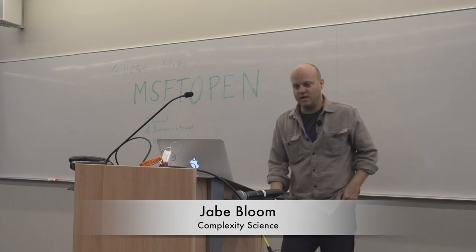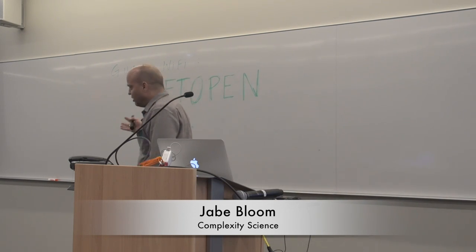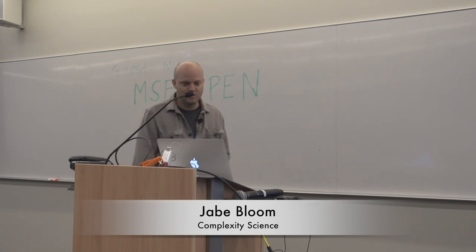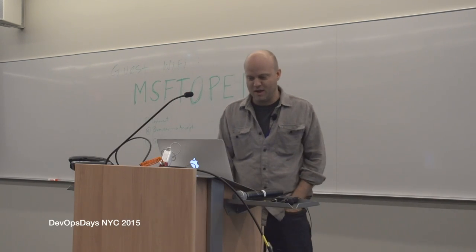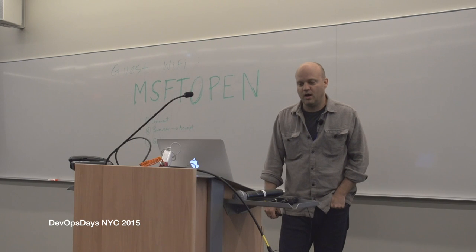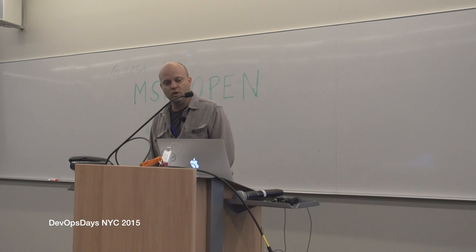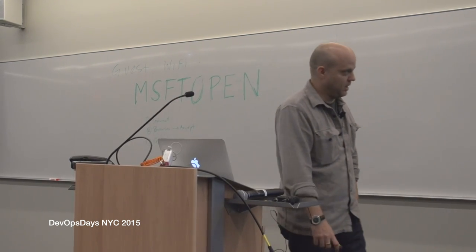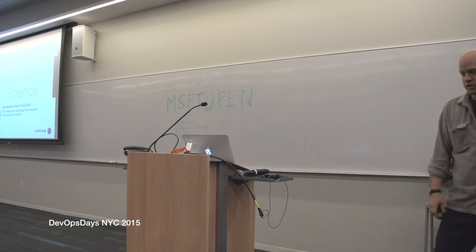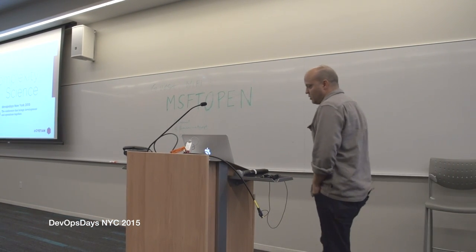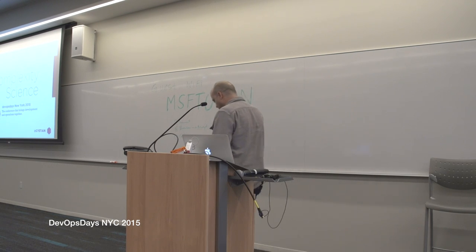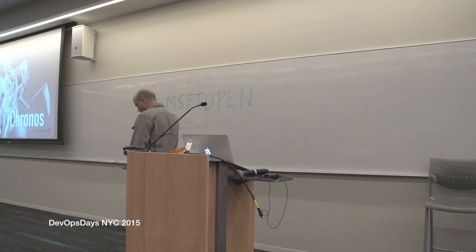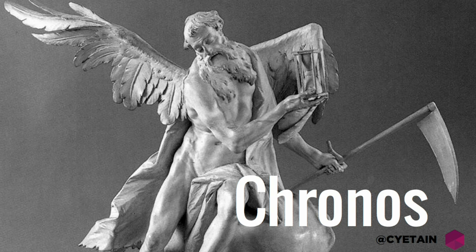My talk is on complexity science — two really incredibly problematic words that Dave asked me to put together for you. I think it's an interesting framing, and I'm going to try to do my best to explain both words relatively well. I'm going to start in a very strange place related to my research as a PhD student. I want to start with the god Kronos, the Greek god Kronos.